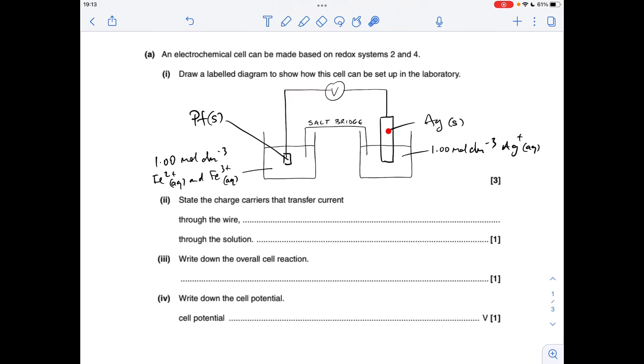Then going around the external circuit, a wire through a voltmeter to the silver electrode dipping into one mole per decimeter cubed solution of Ag+ ions. The solutions are connected via a salt bridge and make sure that your salt bridge is definitely in the solution.